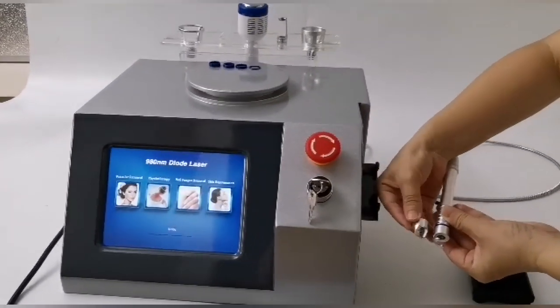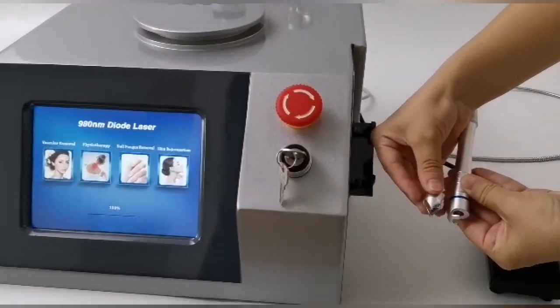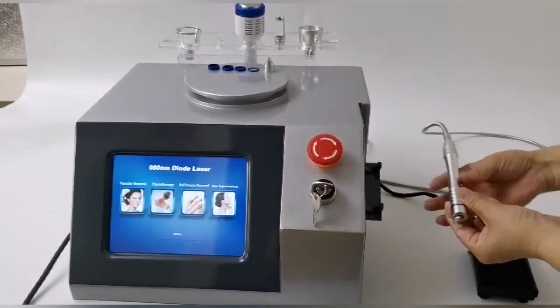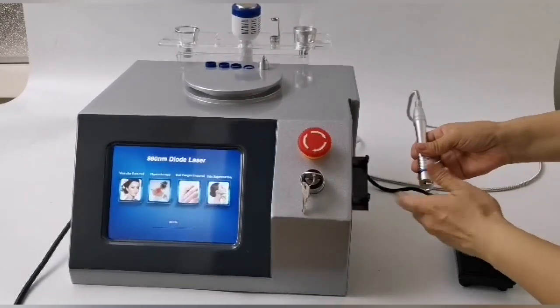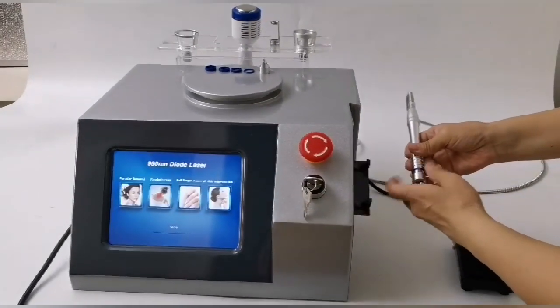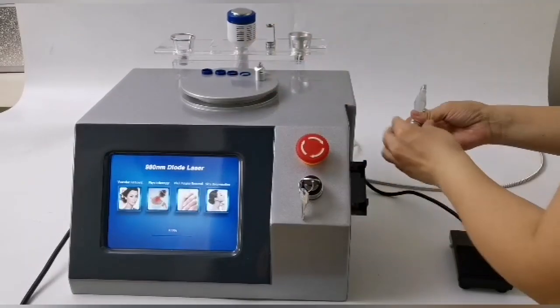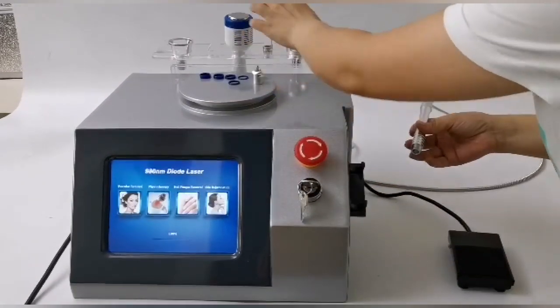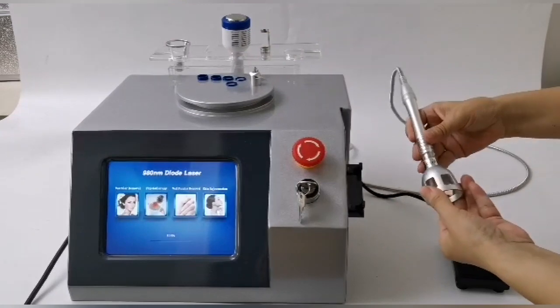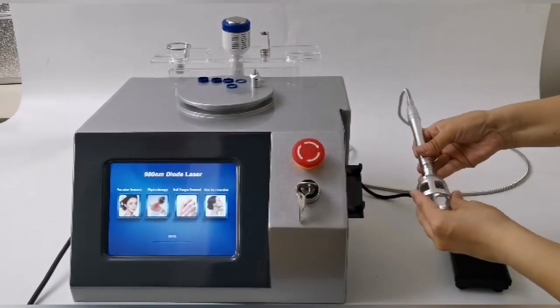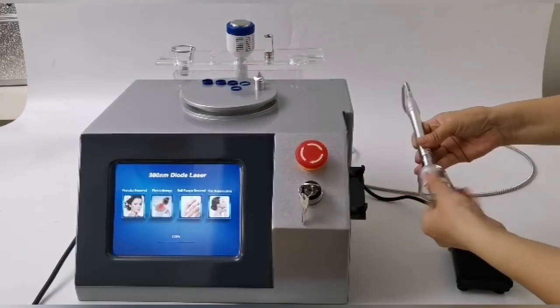This is the operation method of 980 removing red blood vessels. When using red blood silk treatment pad to remove red blood vessels, the most commonly used focusing ring is 0.5mm. If the red blood vessel is thick, then change into the thinner focusing ring.